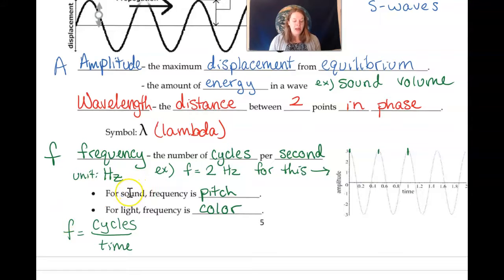So for sound, if I increase the hertz or the frequency, I increase the pitch. So I have like a higher pitch note, like an ee as opposed to an ah sound. And for light, if I increase the frequency or change the frequency, I'm actually changing the color or the type of light. And more on that at the Zoom meeting on Wednesday.